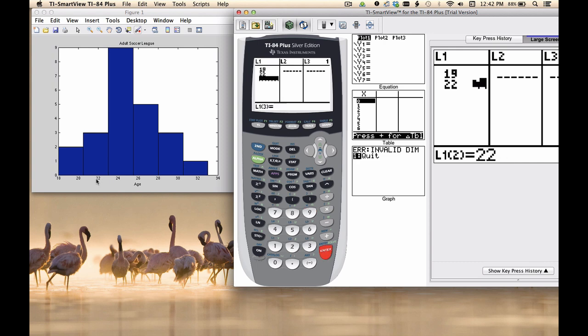This bin I'll call 22, then 24. This one I'm going to say 27, then 29, and 32.